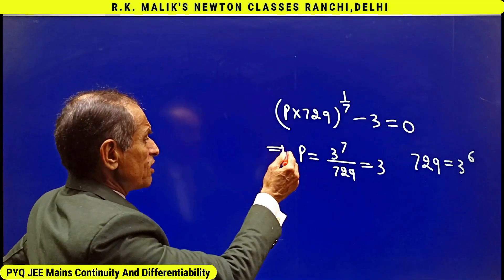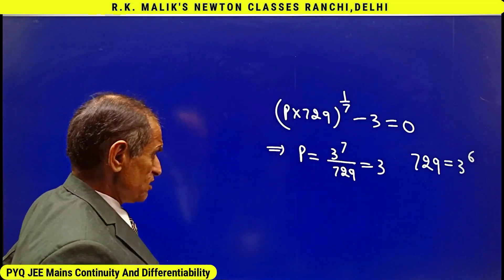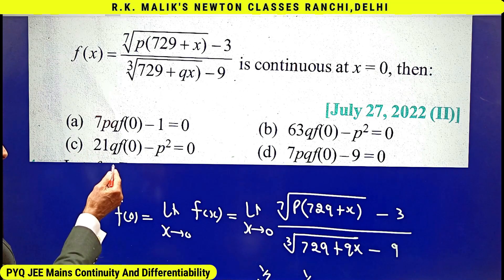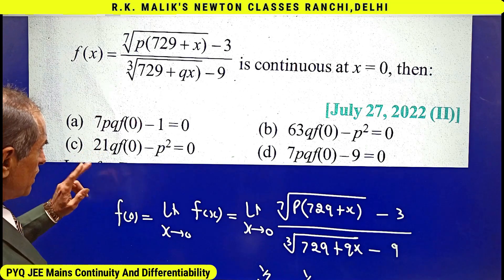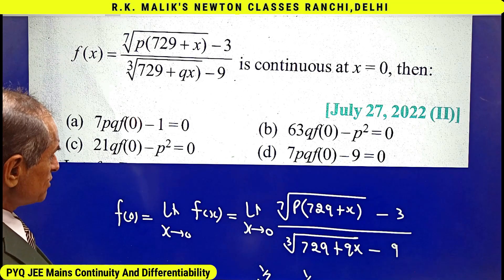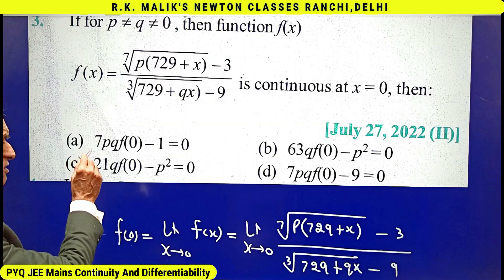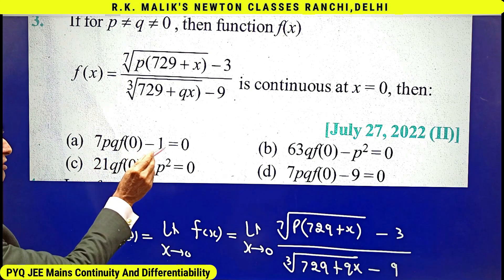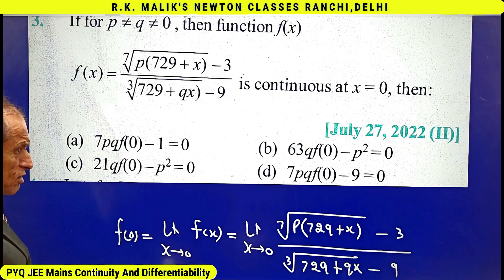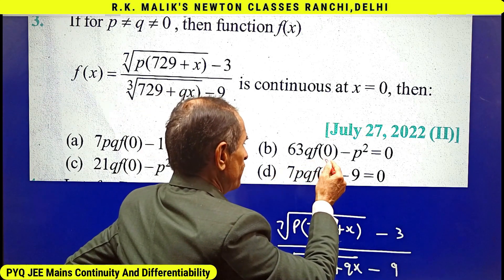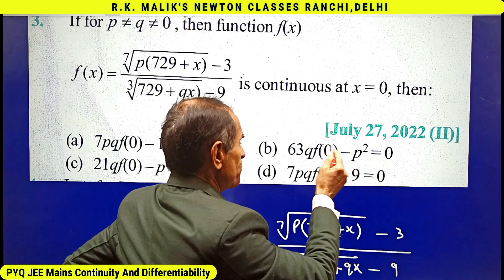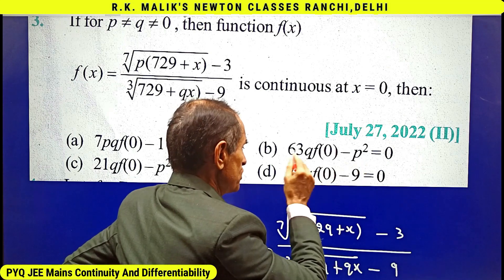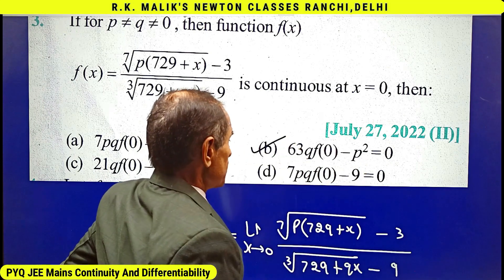Note that we had already found the value of p as 3. Now let us check the answer choices by putting p equal to 3. We need f(0) equal to 1/(7q). Checking the options: in one case f(0) gives 1/(21q), which is wrong. In another case, f(0) gives 9/(63q), which equals 1/(7q). Hence option b is the correct choice.